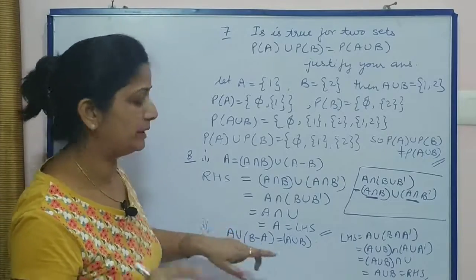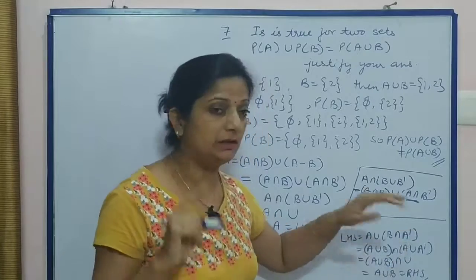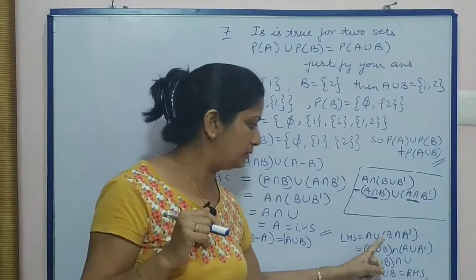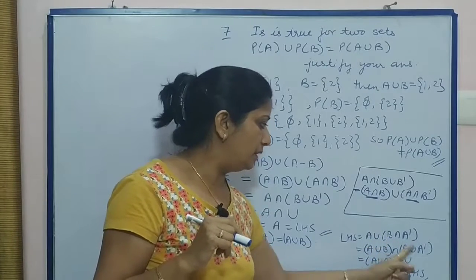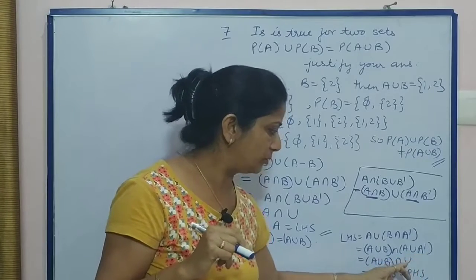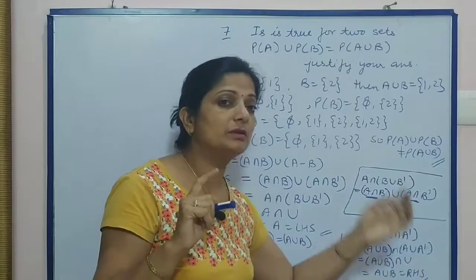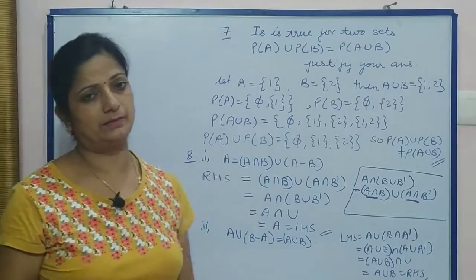Again, B minus A is replaced by B intersection A complement. Now by distributive property, (A union B) intersection (A union A dash). A union A dash is again replaced by the universal set. And (A union B) intersection universal set equals A union B, which is our RHS.